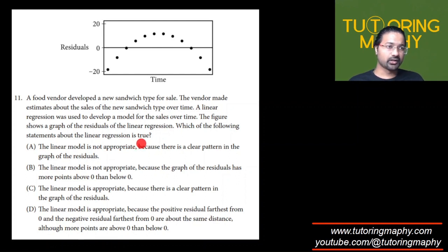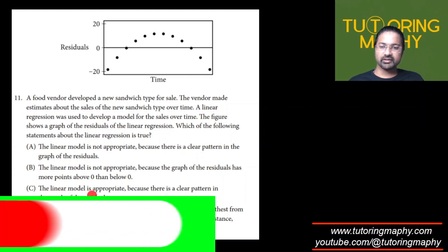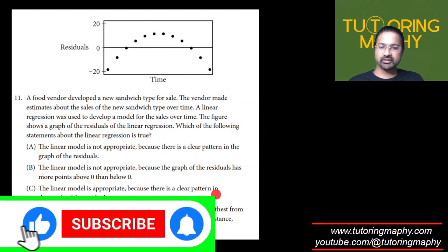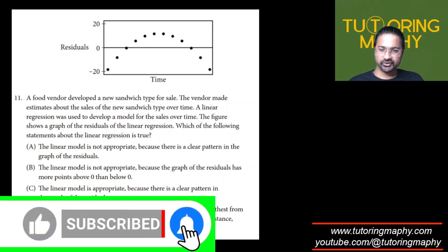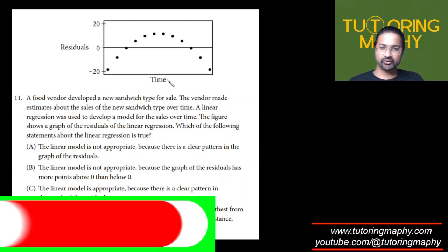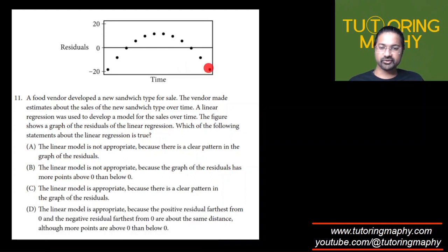The linear model is not appropriate because there is a clear pattern in the graph of the residuals. The linear model is not appropriate because the graph of the residuals has more points above zero than below zero. The linear model is appropriate because there is a clear pattern in the graph of the residuals. And the linear model is appropriate because the positive residual farthest from zero and the negative residual farthest from zero are about the same distance. Although more points are above zero than below.